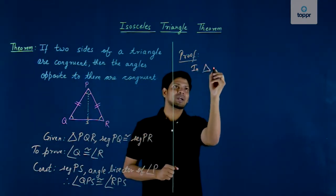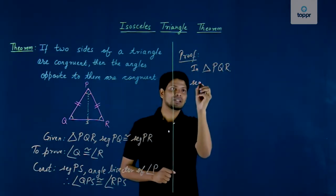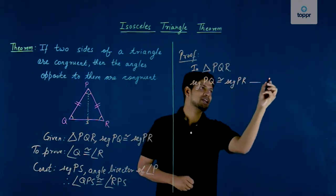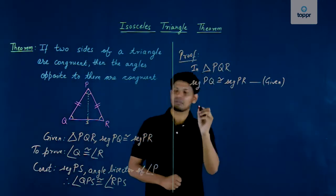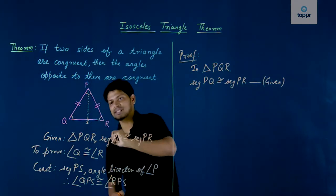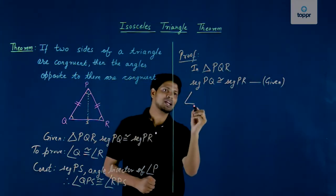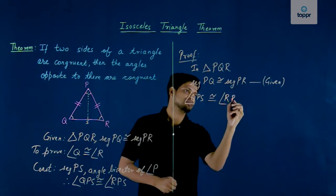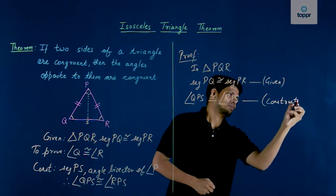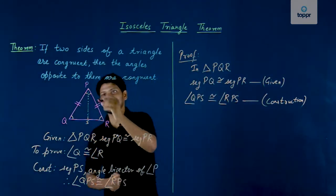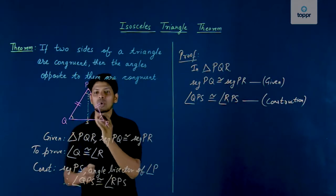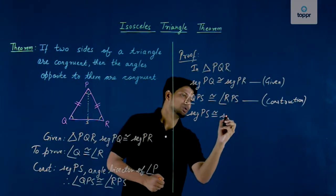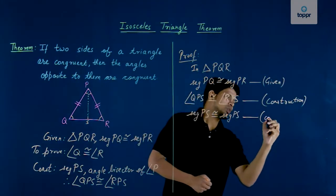In triangle PQR, segment PQ is congruent to segment PR — this is the given data. By construction, angle QPS is congruent to angle RPS. Also, PS is a common side to both triangle QPS and triangle RPS, so segment PS is congruent to segment PS.